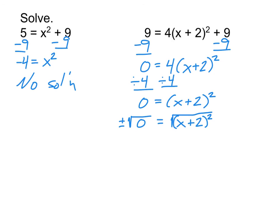For the second one, work through the normal steps and 0 appears — but you can still operate on it. We have plus or minus square root of 0. The square root of 0 does exist: it's 0. And since negative 0 doesn't really make sense, the plus or minus is irrelevant here. So 0 equals x plus 2, and subtracting 2 from both sides gives x equals negative 2. There's only one solution in this case, which tells us we're dealing with it crossing through the vertex of the parabola.